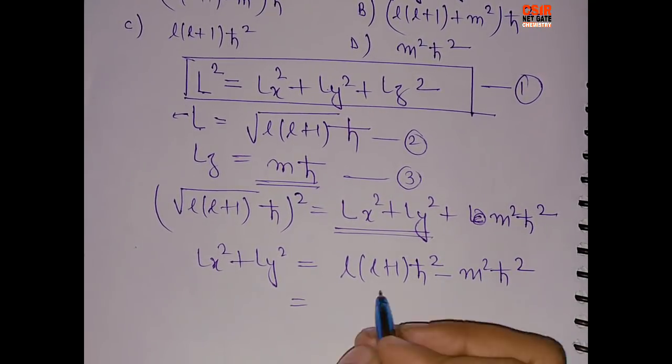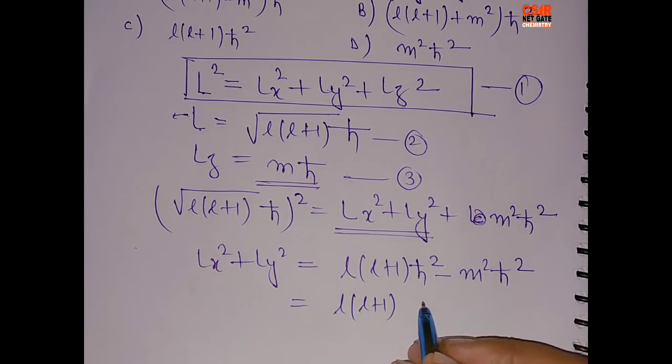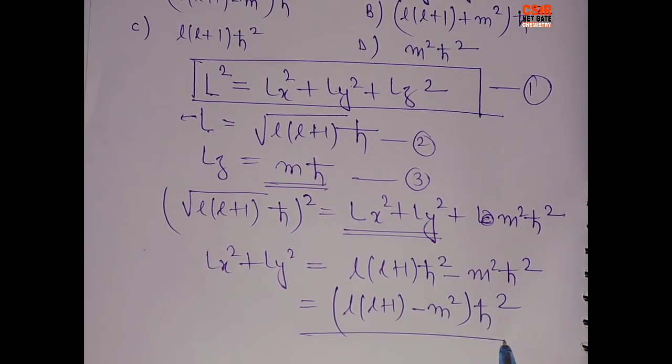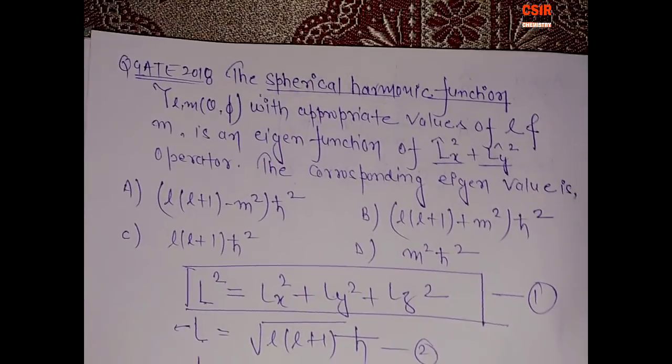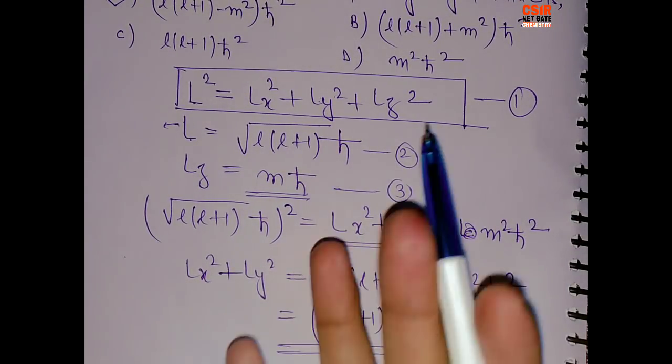ħ². Take ħ² common: this is [L(L+1) - m²]ħ². So this is nothing but your option A. So A is the correct answer. See, you have to